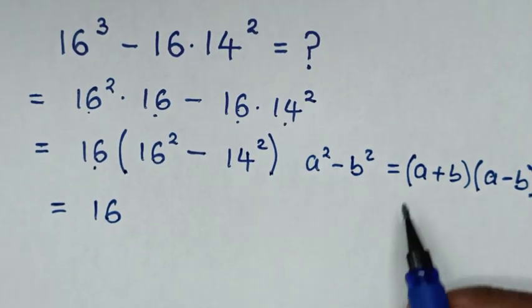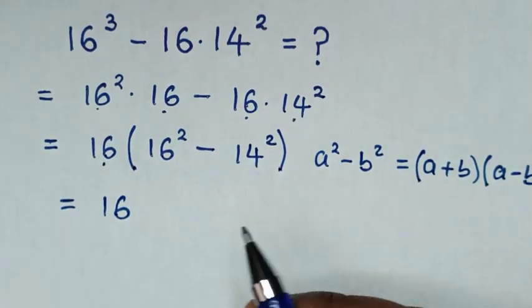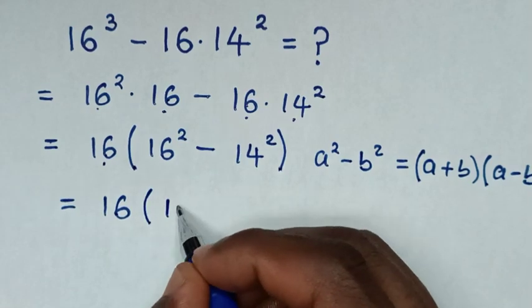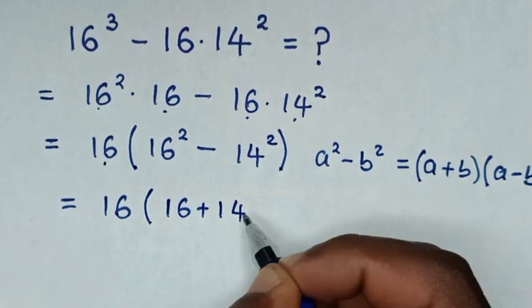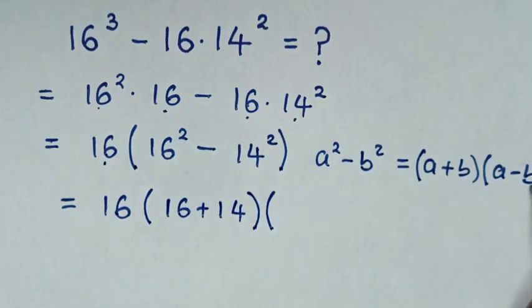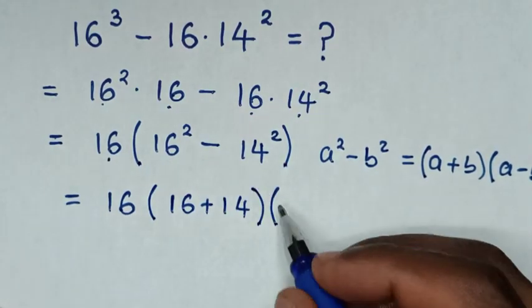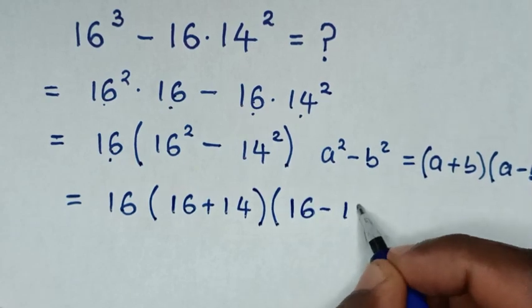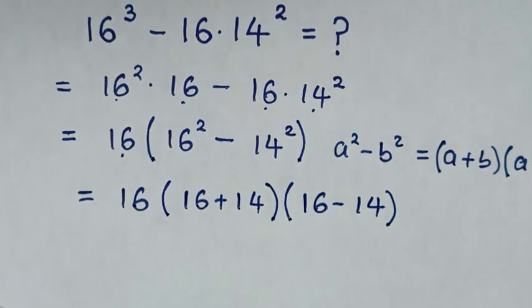So it will be a plus b is 16 plus 14, bracket 16 plus 14 bracket. A minus b is 16 minus 14 bracket.